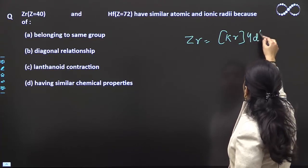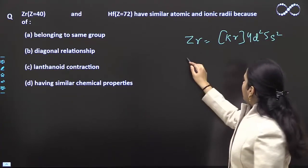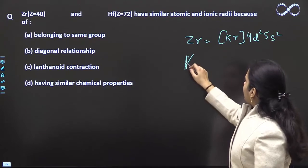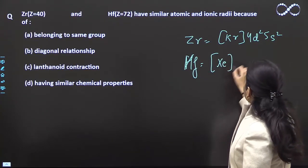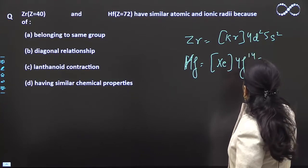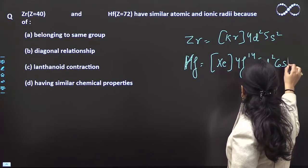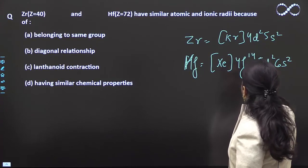is krypton 4d2 5s2, and hafnium electronic configuration is xenon 4f14 5d2 6s2.